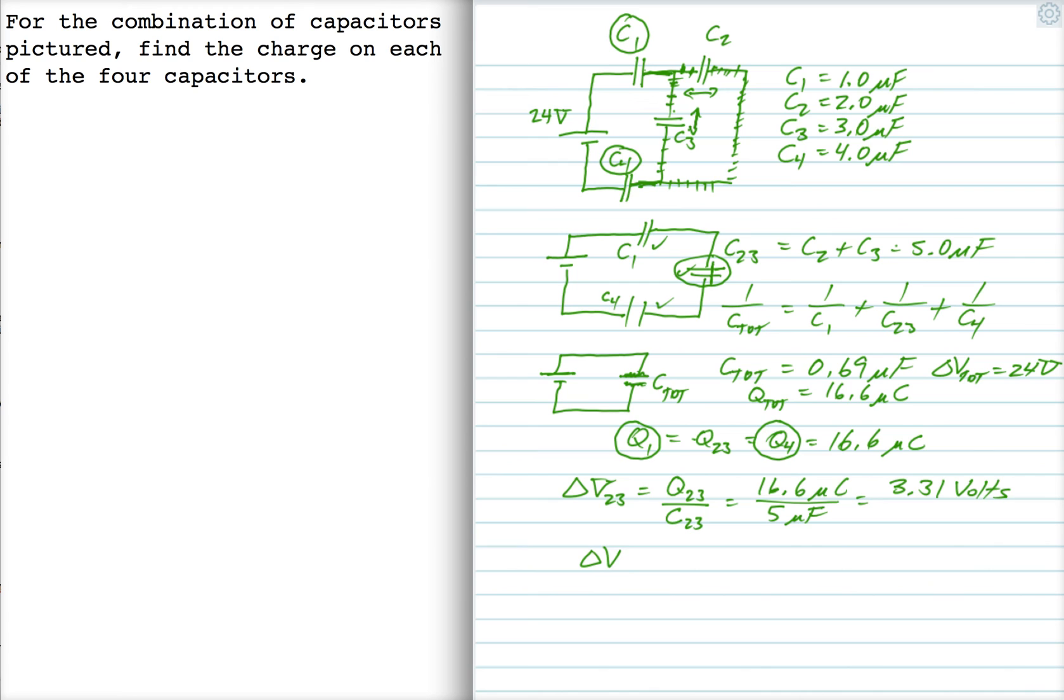So delta V2 and delta V3 are 3.31 volts. Alright, so now I know two out of three things for capacitors 2 and 3, and I can solve for the charges. Q2 is C2 delta V2, which is 6.6 microcoulombs, and Q3 is C3 delta V3, and that's 9.9 microcoulombs. Okay, so there are my four answers, my charges on each of my four capacitors.